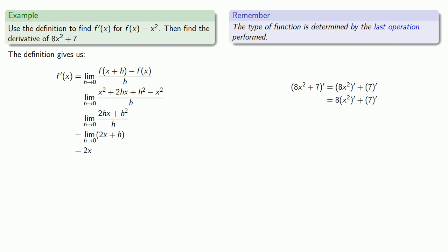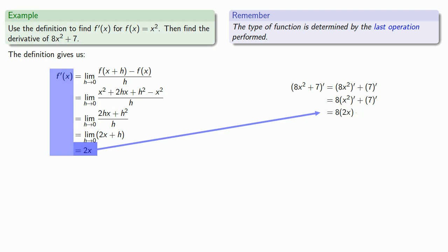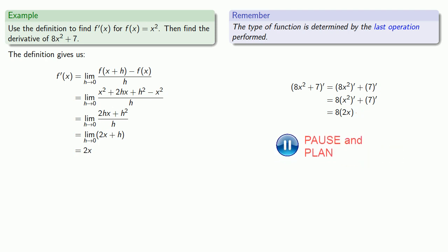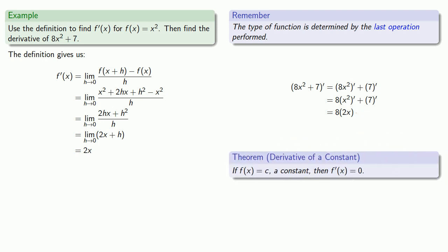Now we need to find two derivatives: the derivative of x² and the derivative of 7. We just found that the derivative of x² is 2x. Since 7 is a constant, its derivative is 0. Doing a little algebra, we arrive at our final derivative.